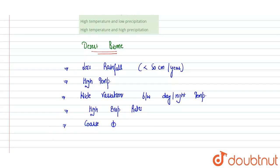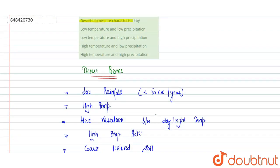Another characteristic of this biome is the presence of coarse textured soil. So these are a few of the characteristic features of the desert biome.